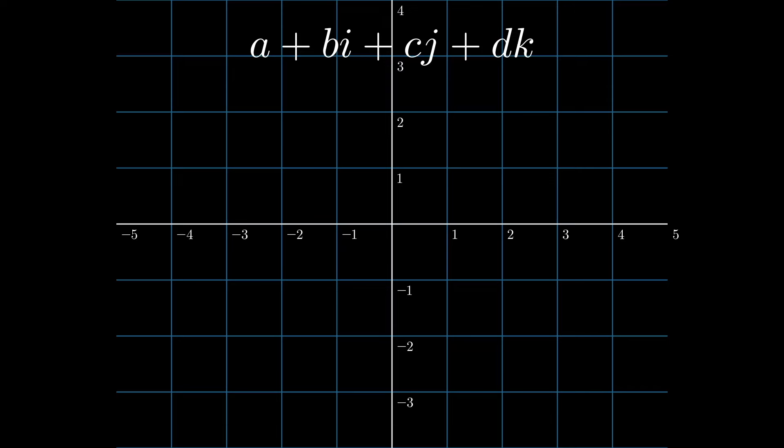These are typically represented as a plus bi plus cj plus dk, where a, b, c, d are real numbers, i, j, k are the fundamental quaternion units.